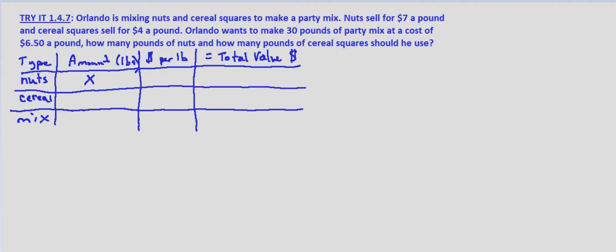So if we have x pounds of nuts, we want 30 pounds total so we know that there are 30 minus x pounds of cereal. And then mix total, he wants 30 pounds.